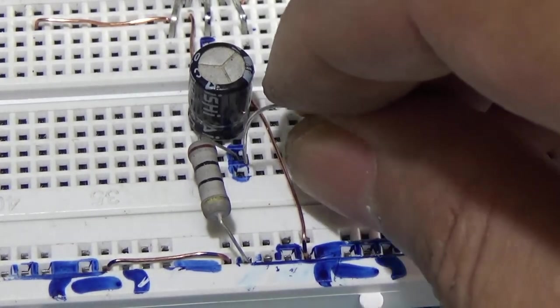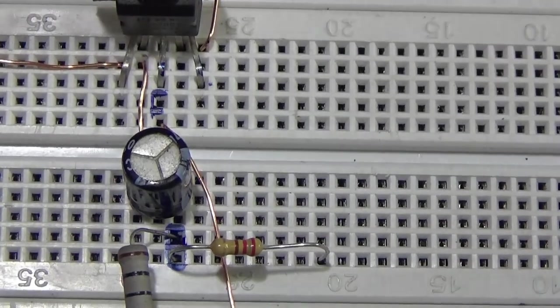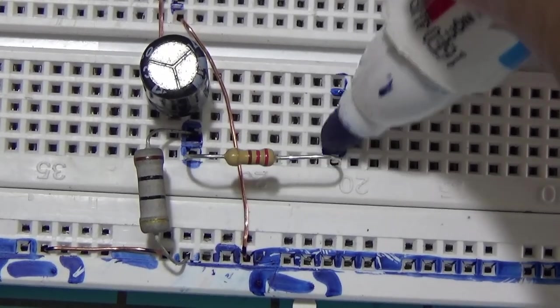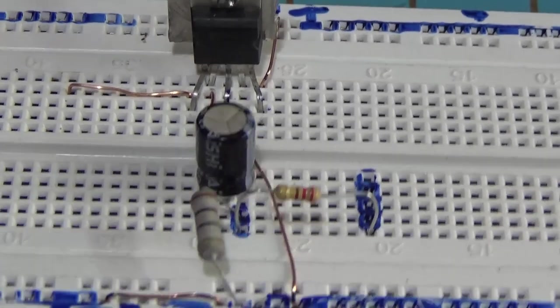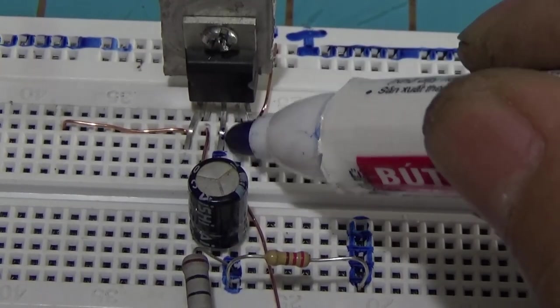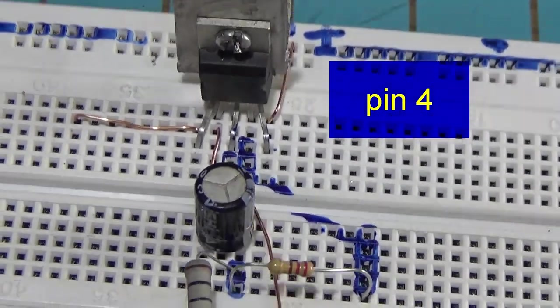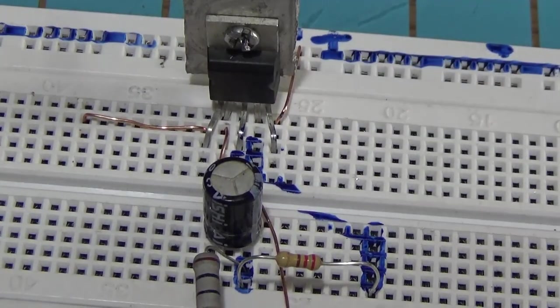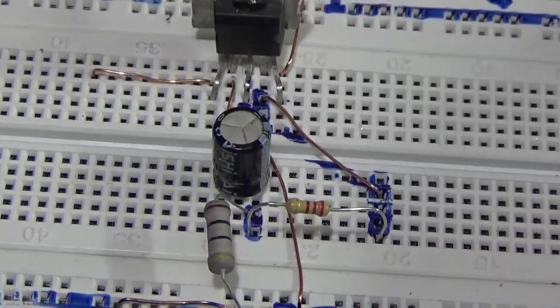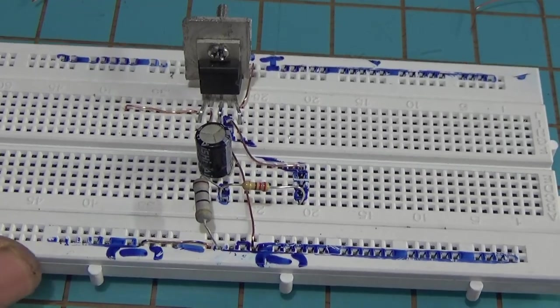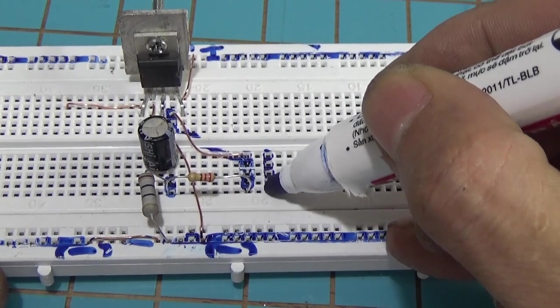Tiếp theo các bạn sẽ nối tiếp với cái con điện trở đó. Ở cái mối giữa tụ và con điện trở 10 ohm đấy, các bạn sẽ nối thẳng ra một con điện trở 220 ohm ra một cái đường khác. Tức là các bạn sẽ chia ra ngã 3 và nối con điện trở 220 ohm ra một cái đường khác và đấu thẳng vào chân số 4 của IC 2003.